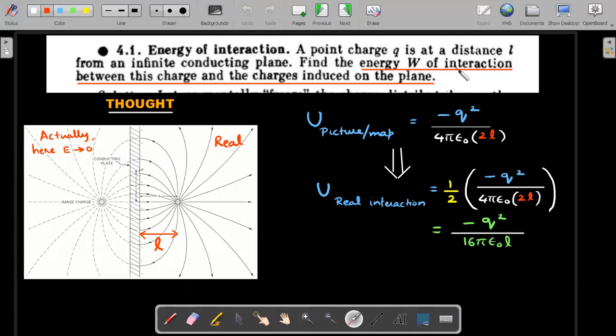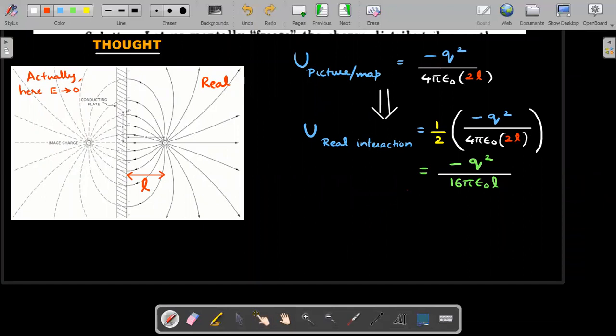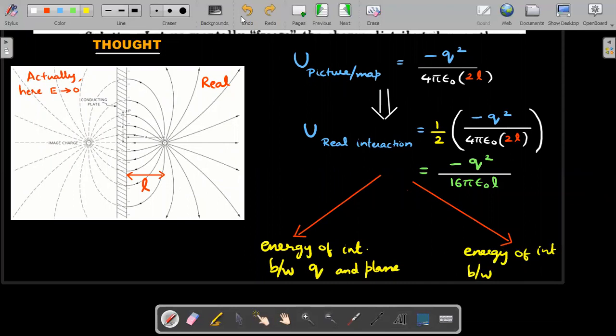The charge q will move in the potential field equivalent to the fictitious charge minus q located at a fixed distance. It's not going to 2x distance every time, it's always at distance L on one side while on the other side it's moving with distance x. This point charge is moving right while the image charge is fixed at distance L.